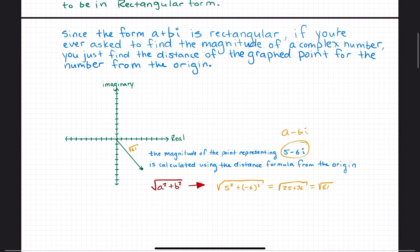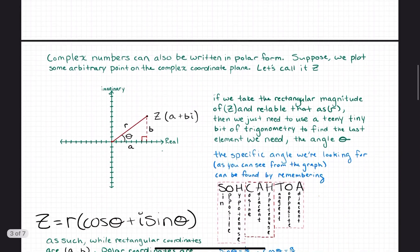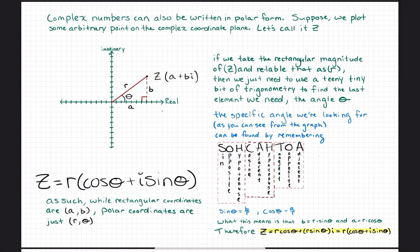There's a reason we took a slide to remind you that you can find the magnitude of a point in rectangular form just like in normal rectangular coordinates — because we can actually use that magnitude, that distance from the origin, as the radius in our polar form. You are going to have to write complex numbers not just in a + bi or rectangular form; you are going to have to write them in polar form as well. It's pretty easy to convert from rectangular to polar form as long as you can find the magnitude and do a little bit of right triangle trigonometry.